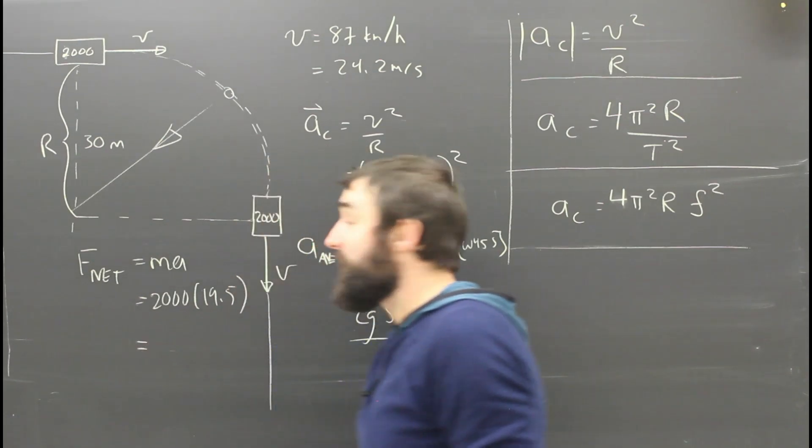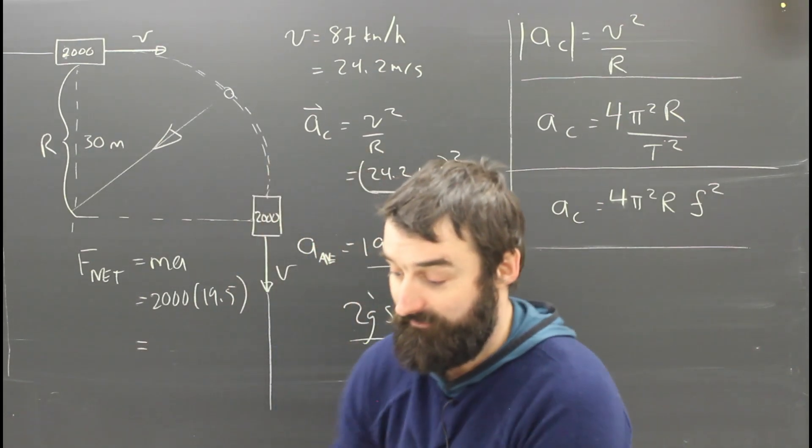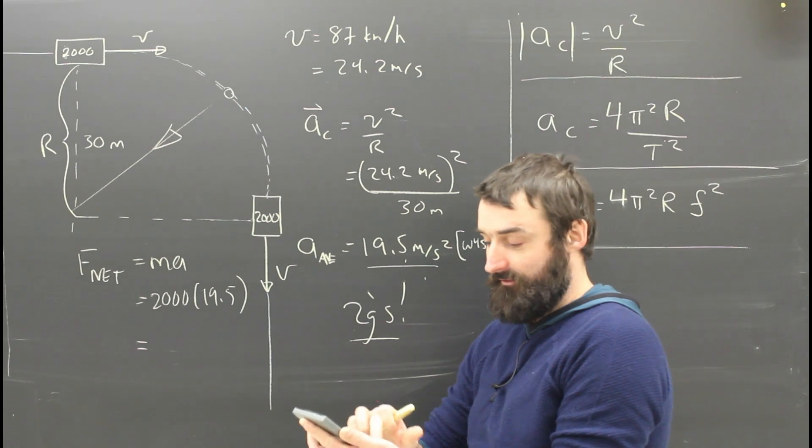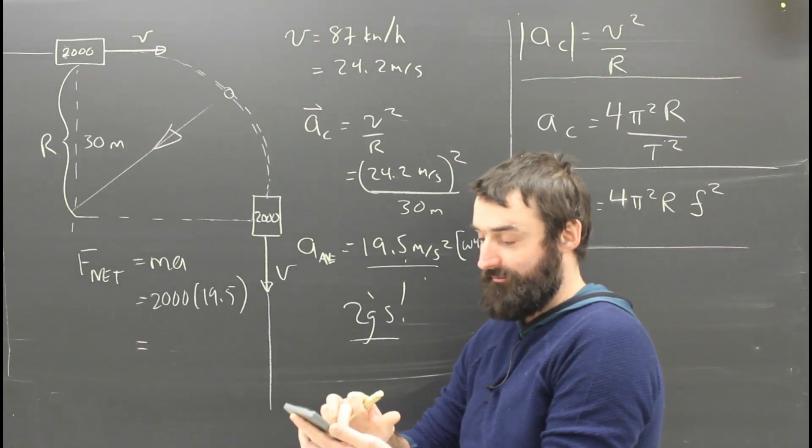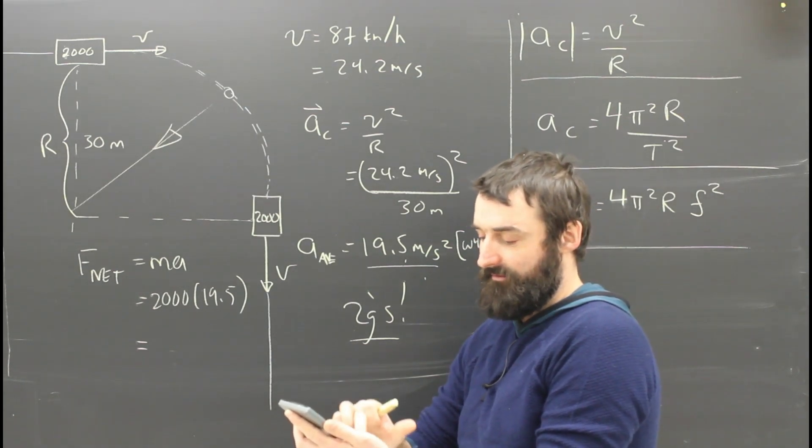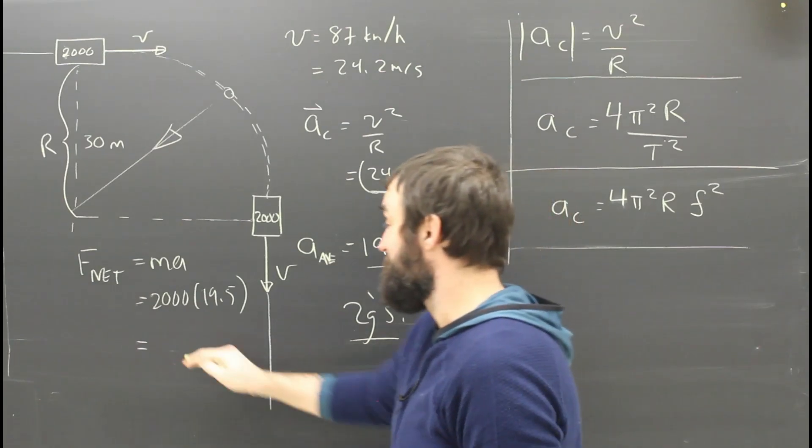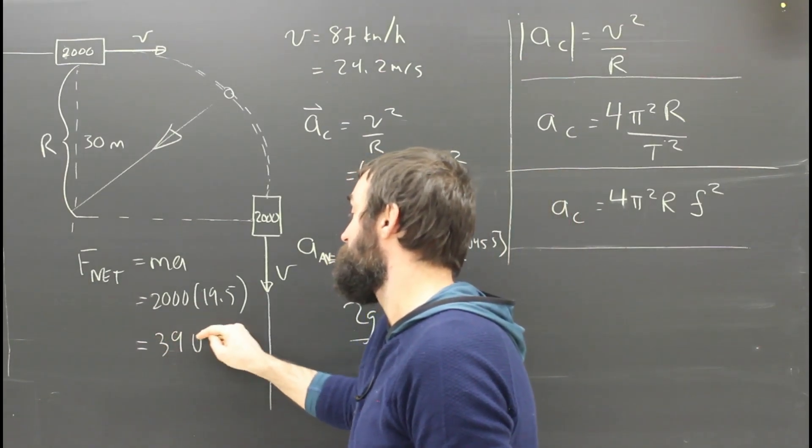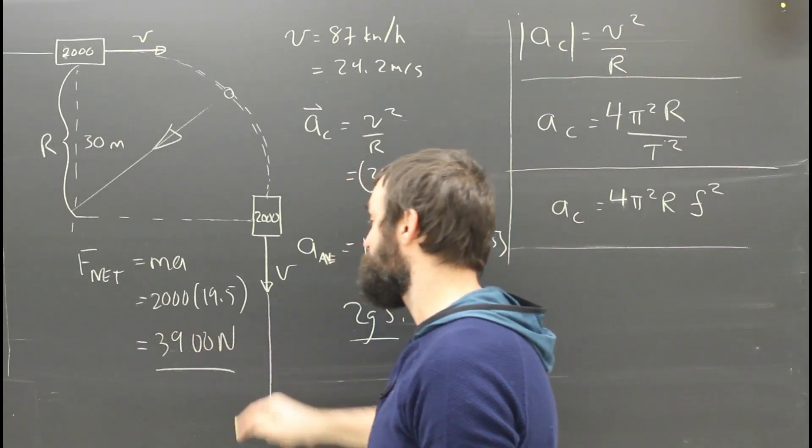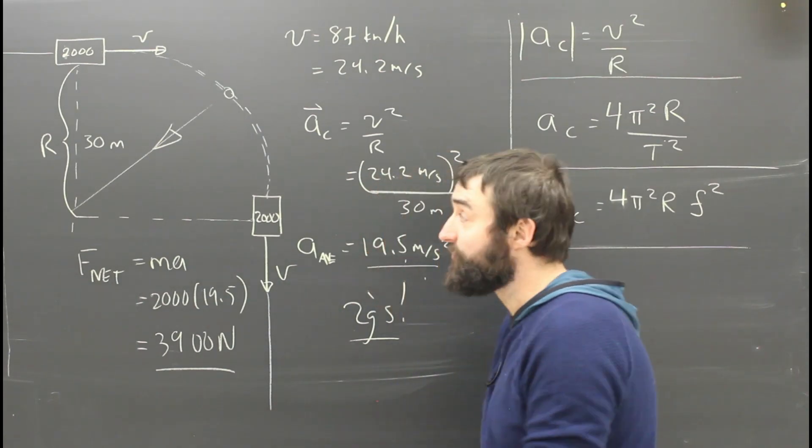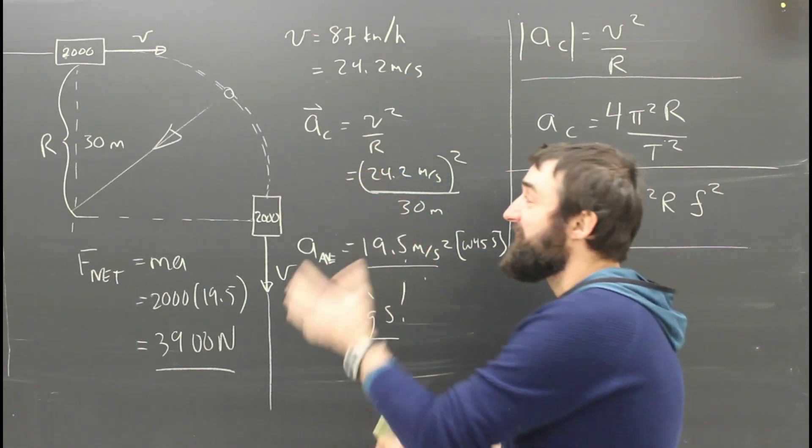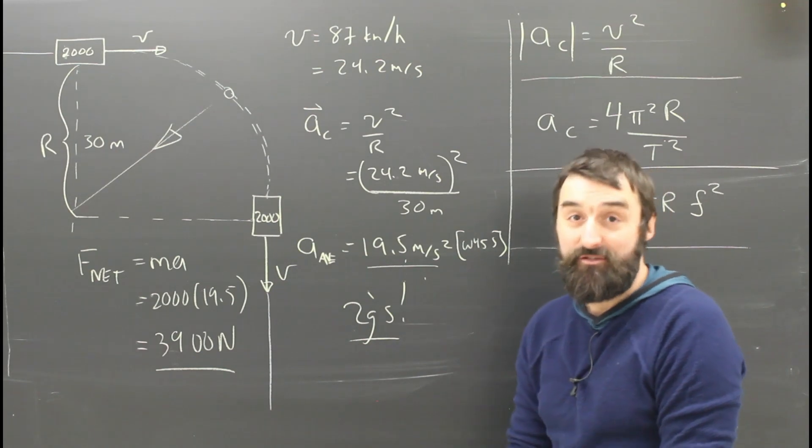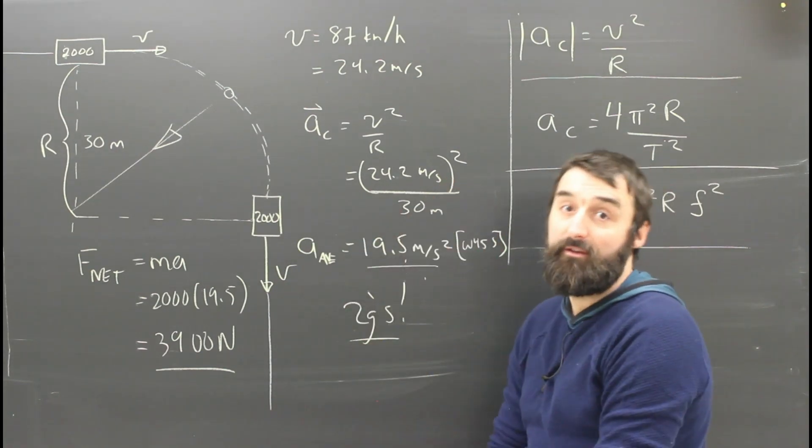But what's 2,000 times 19.5? I don't know Mr. Caruana. What is 2,000 times 19.5? 2,000 times 19.5 gives us 39,000 Newtons. So, it would require an unbalanced force of 39,000 Newtons towards the center of the circle to force this car to make the turn. If friction's not up for it, the car will skid.